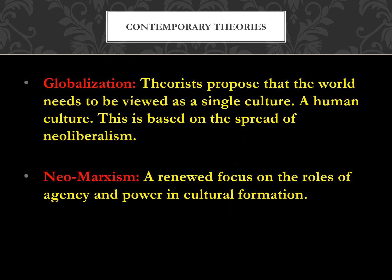Other contemporary theories include globalization, which proposes that the world needs to be viewed as a single global human culture based on the spread of neoliberalist economic policies — we'll discuss this much later in the semester. We also have Neo-Marxism, which is a renewed focus on the roles of agency and power within cultural formation — how an individual's agency and power influence the development of cultural institutions. These are the most popular theoretical trends we see today, and that concludes our brief overview of the history of anthropological thought. We'll revisit these theorists and theories as we move throughout the semester.